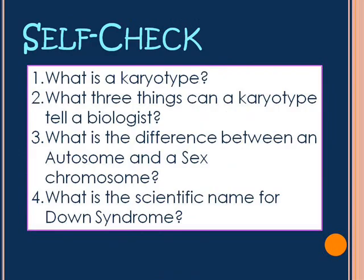Here are your self-check questions from the beginning of the video. Hopefully now you can tell me what a karyotype is, what three things a karyotype could tell a biologist, what's the difference between an autosome and a sex chromosome, and what's the scientific name for Down syndrome.